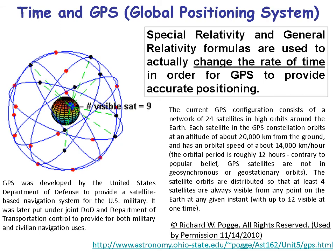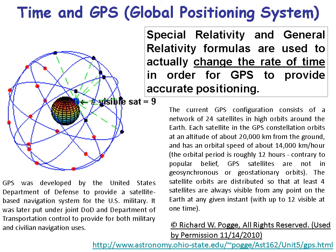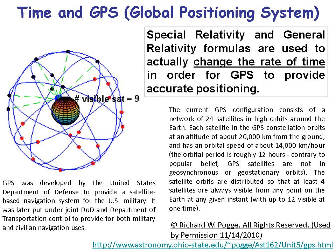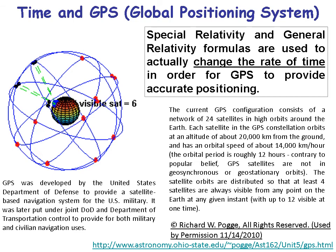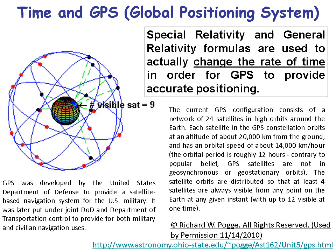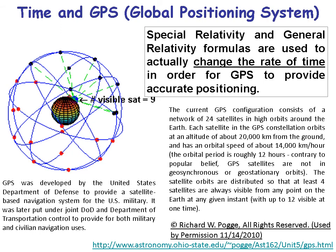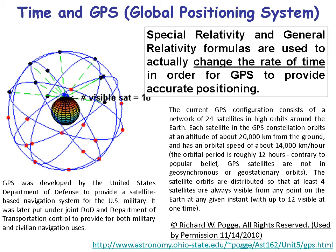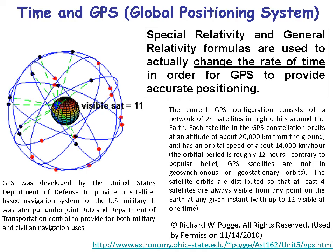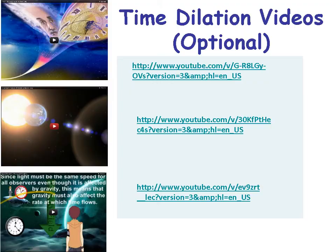The current GPS system was developed by the U.S. Department of Defense and then put under joint DOD and Department of Transportation control for civilian and military use. It consists of a network of 24 satellites. Each satellite orbits at an altitude of about 20,000 kilometers from the ground with an orbital speed of 14,000 kilometers per hour. Gravity is different up there than on the surface of the Earth, so the rate of time must change between those satellites and us.